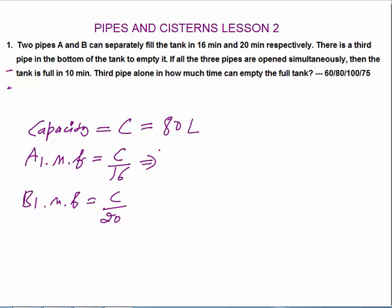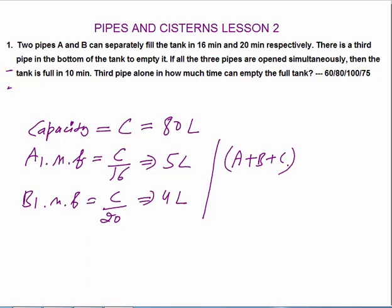So pipe A fills 5 liters per minute and pipe B fills 4 liters per minute. Together they fill 9 liters per minute. Since the tank gets full in 10 minutes when all three pipes operate simultaneously, the net one-minute fill is 80 divided by 10, which is 8 liters per minute.